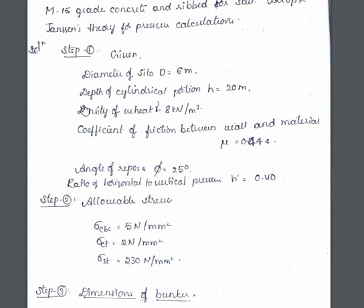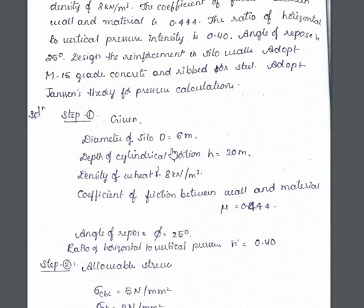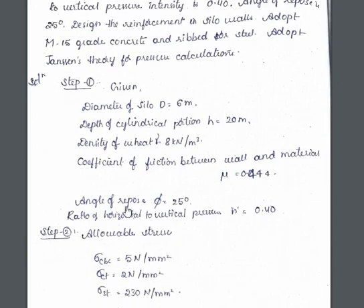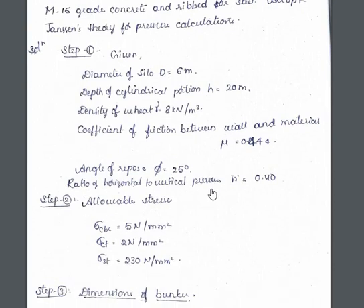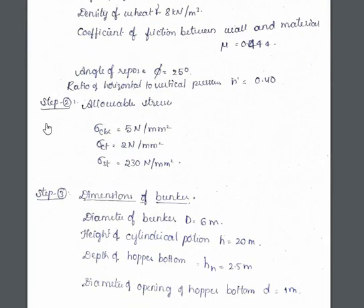Step 1: write the given data. Diameter of silo is 6 meters, depth of cylindrical portion is 20 meters, density of wheat material gamma is 8 kilonewton per meter cube, coefficient of friction between wall and material is 0.444, angle of repose phi is 25 degrees, and ratio of horizontal to vertical pressure n is 0.4. If n is not given, use the formula (1 - sin phi) / (1 + sin phi).